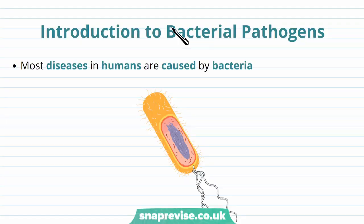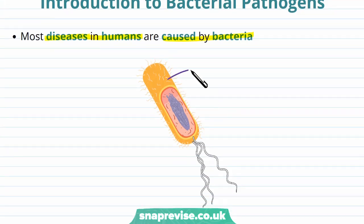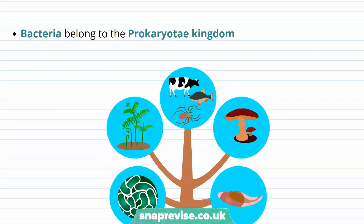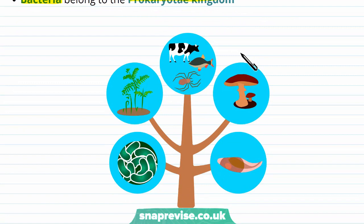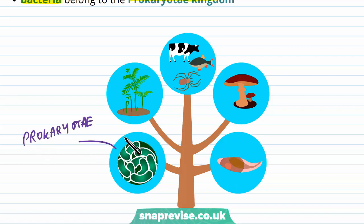Although there are different types of organisms which can cause disease, most diseases in humans are caused by bacteria. Bacteria act as pathogens, and there are many species of bacteria. Bacteria belong to one of the kingdoms called the prokaryotae kingdom. There are five kingdoms: animals, plants, fungi, protist or protista, and the prokaryotae kingdom, which comprises various different species and types of bacteria.